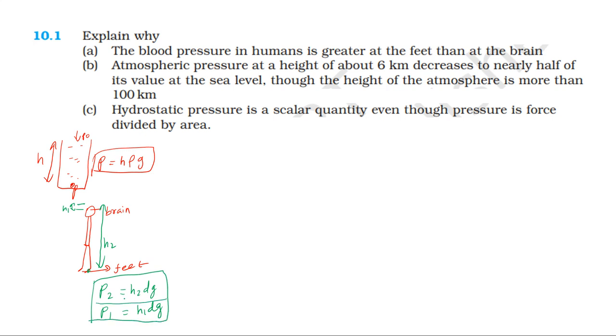If H2 is greater than H1, then P2 is greater than P1. P2 is pressure at feet. P1 is pressure at brain. Pressure at feet is greater than pressure at brain.